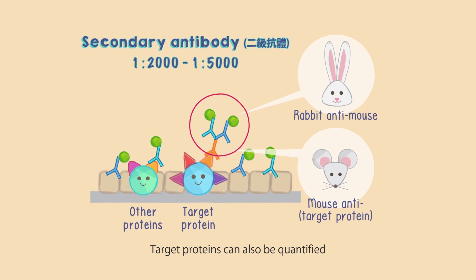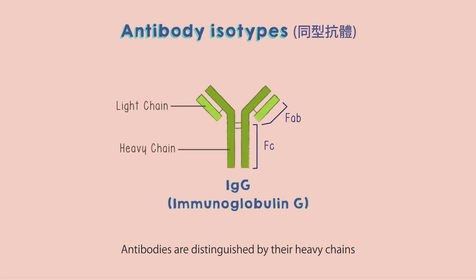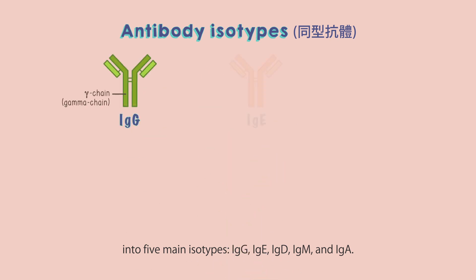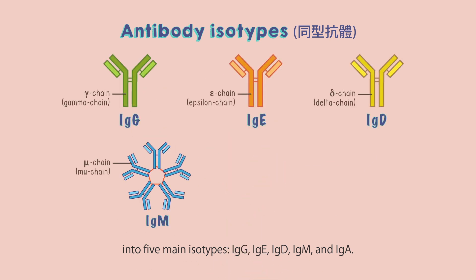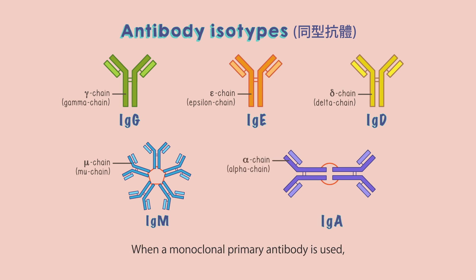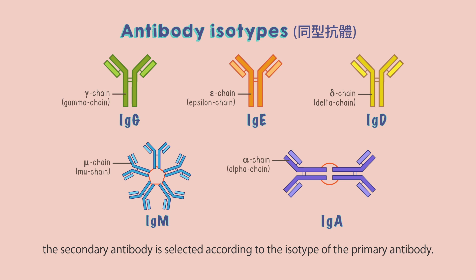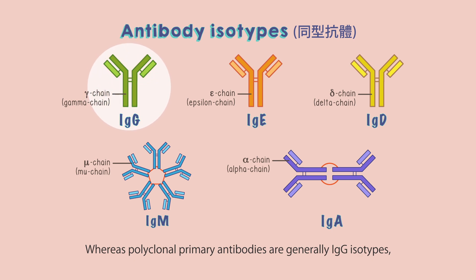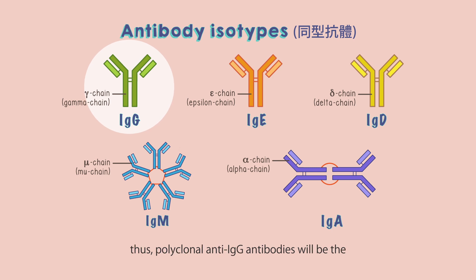Target proteins can also be quantified according to the strength of the signals detected. Antibodies are distinguished by their heavy chains into five main isotypes: IgG, IgE, IgD, IgM, and IgA. When a monoclonal primary antibody is used, the secondary antibody is selected according to the isotype of the primary antibody, whereas polyclonal primary antibodies are generally IgG isotypes. Thus, polyclonal anti-IgG antibodies will be the ideal secondary antibodies under such conditions.